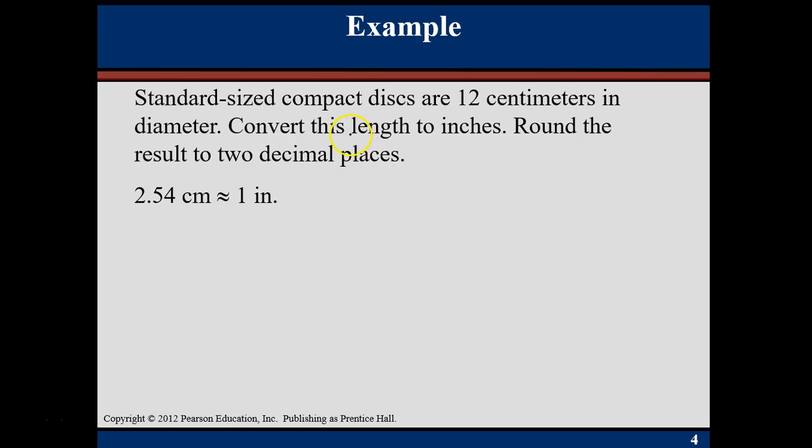A standard size compact disc, those old CDs, they're about 12 centimeters in diameter, and we want to convert that to inches. I know that 1 inch is about 2.54 centimeters. So if I'm converting to inches, that's what needs to go up top. I'm going to say 1 inch is the same as 2.54 centimeters. I'm converting from centimeters, and I have 12 centimeters. When you're multiplying fractions and one of them is a whole number, just put a 1 underneath.